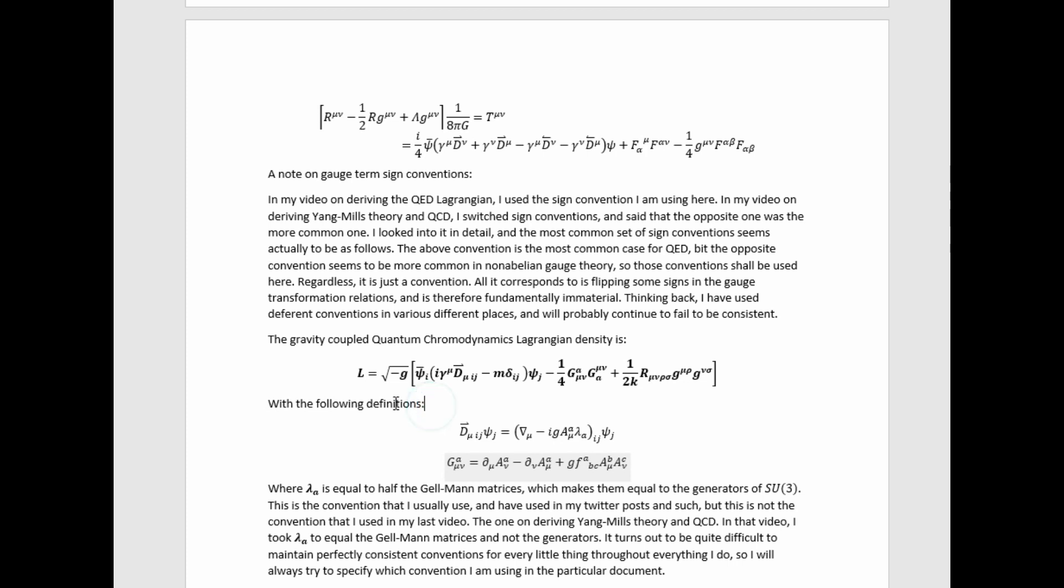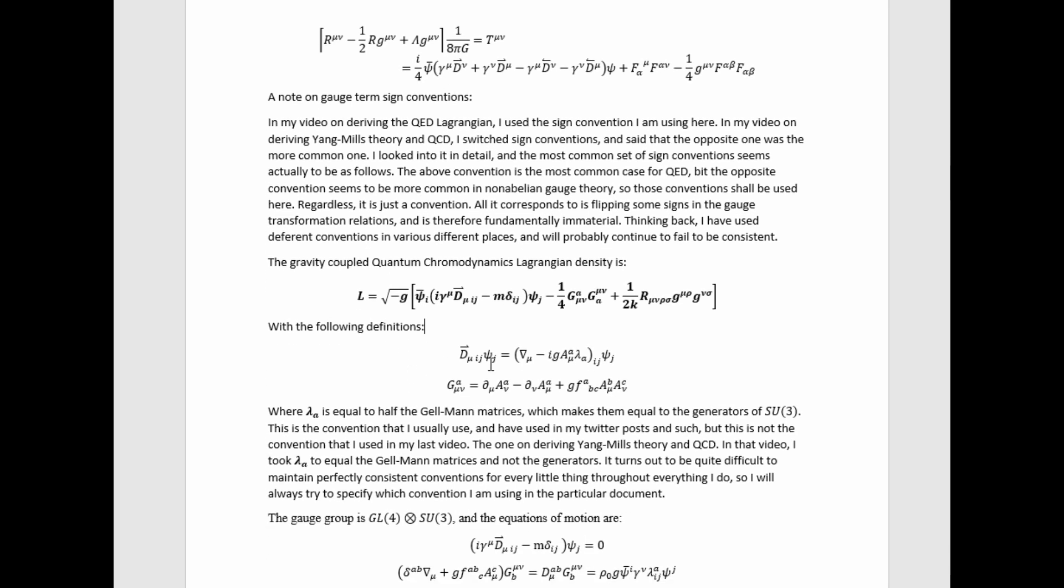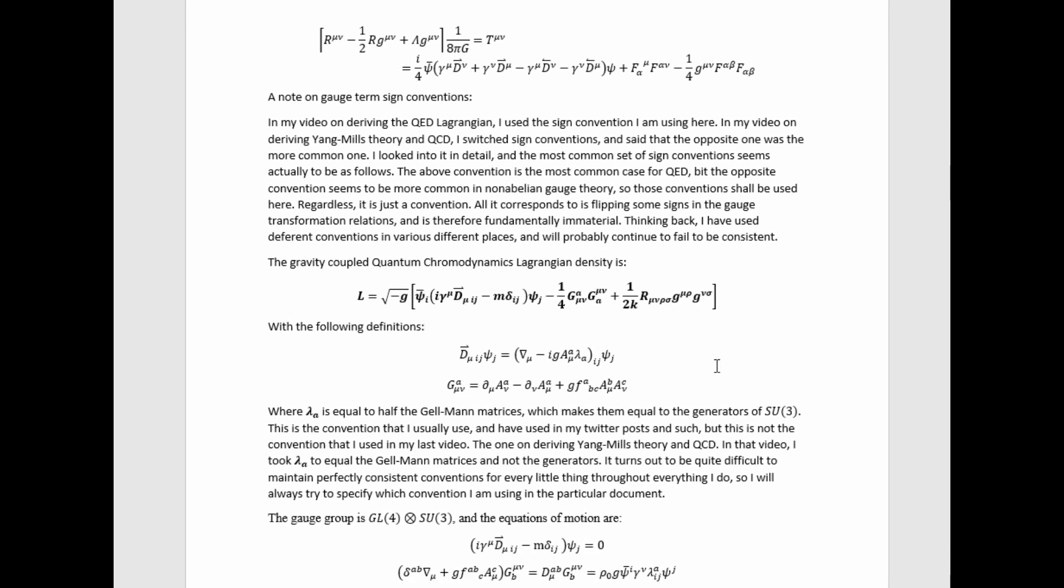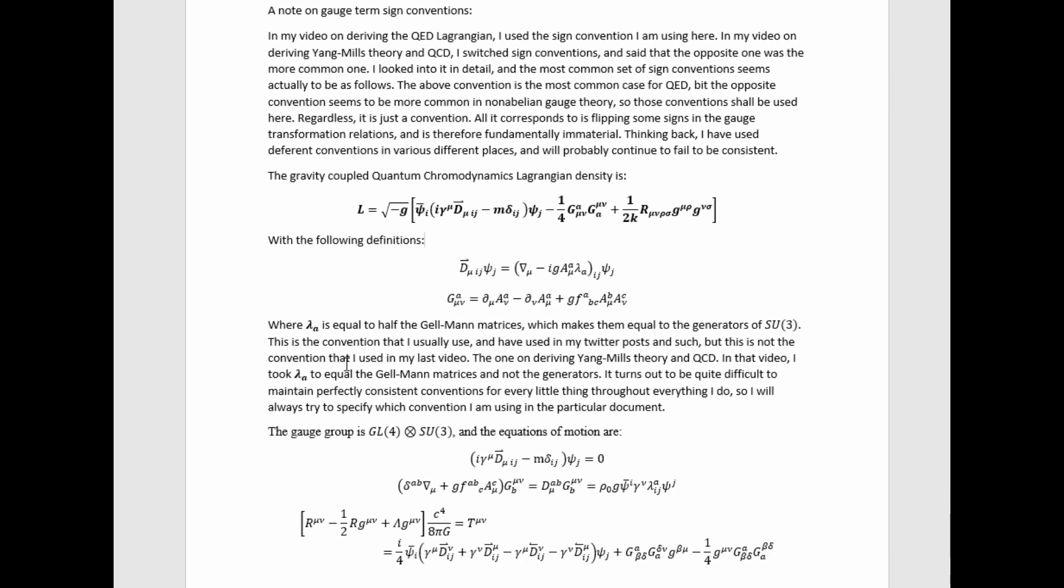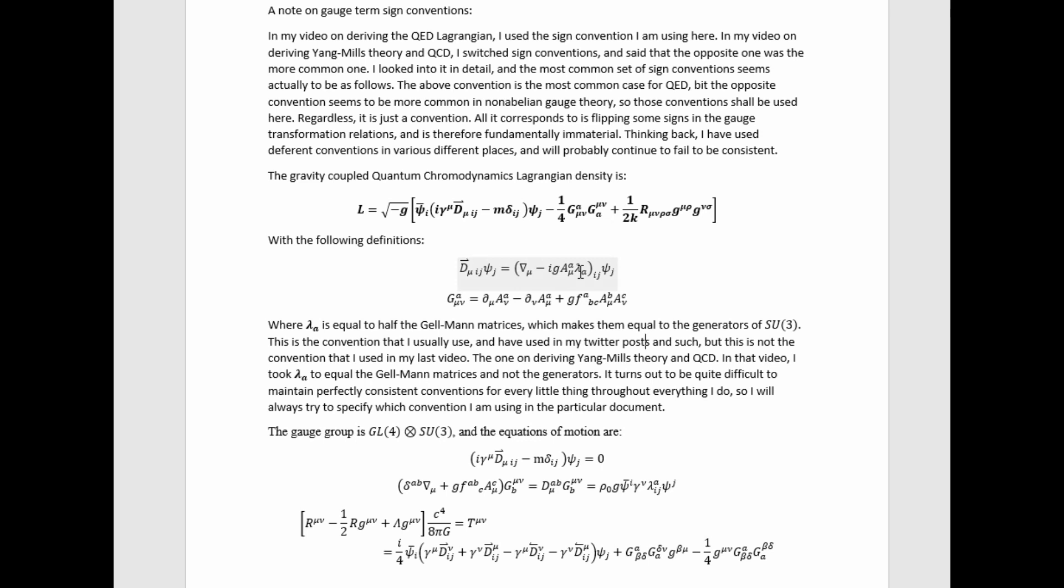Following that same process, we arrive at this result for the gravity-coupled quantum chromodynamics Lagrangian, where we have this value for the gauged covariant derivative. I already explained why these are partial derivatives, and don't need to be covariant derivatives, where lambda A, right there,